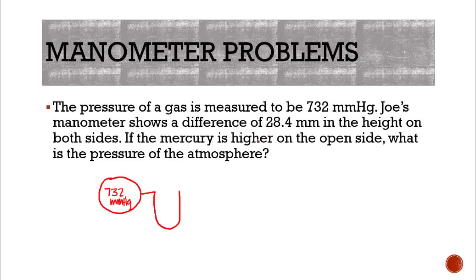So our next question, or our next statement: if mercury is higher on the open side. So again, remember this is our open side. So it's going to be higher on this side than on this side by 28.4 millimeters, because remember that's our difference. So if the mercury is higher on the open side, what is the pressure of the atmosphere? So this is what we're trying to figure out, the pressure of the atmosphere up here. Well, from the looks of it, because now we know we have this situation, the pressure of the gas is pushing down more because it's higher on the atmosphere side.